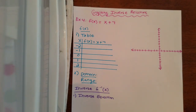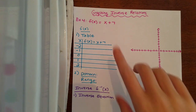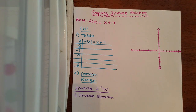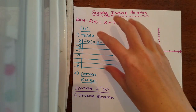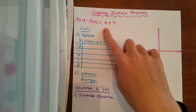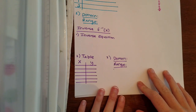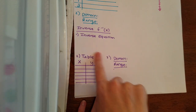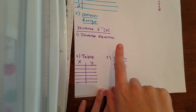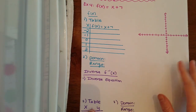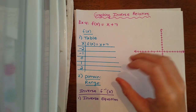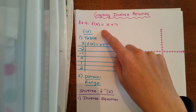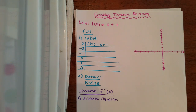Example four is all about graphing inverse relations, so we're basically going to be combining everything we've talked about so far. On this first one, we'll be focusing on the function f of x equals x plus 7. We'll be making a table of values to plot f of x, finding the domain and range, and then doing the same thing with the inverse — making a table, finding domain and range, and finding our inverse equation.